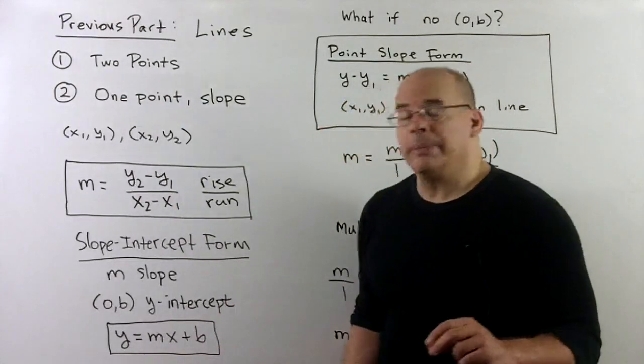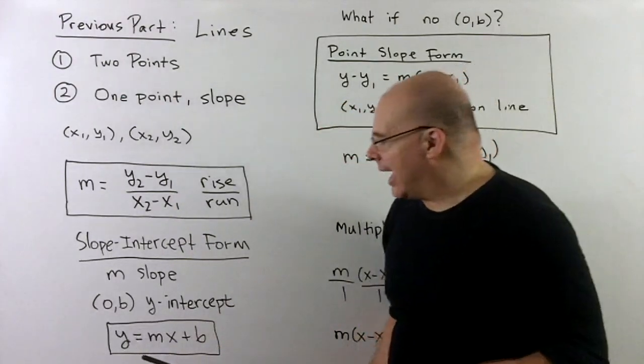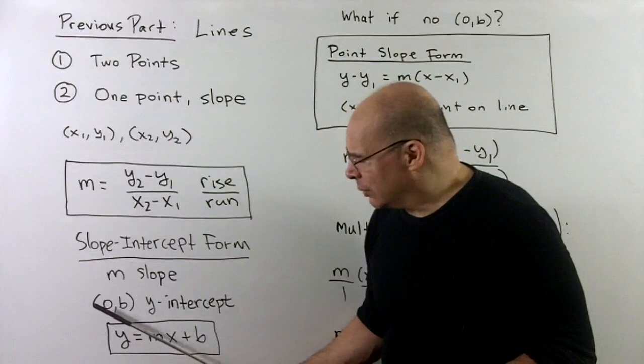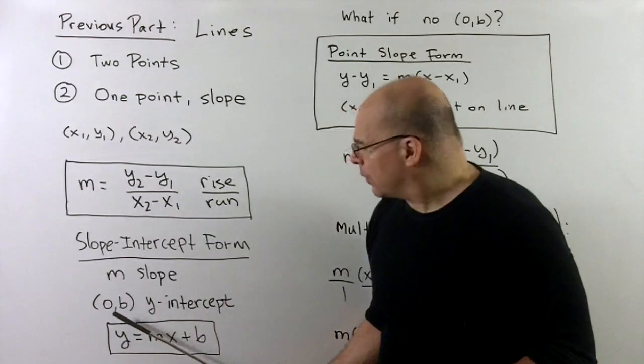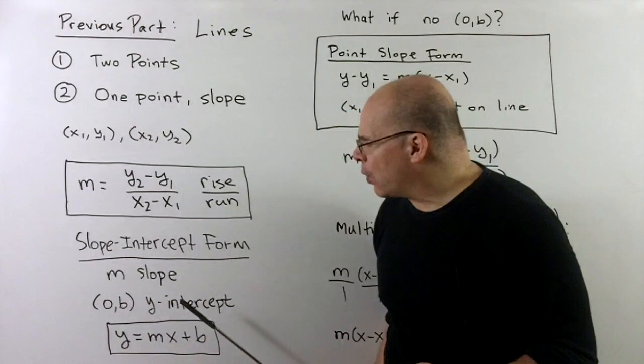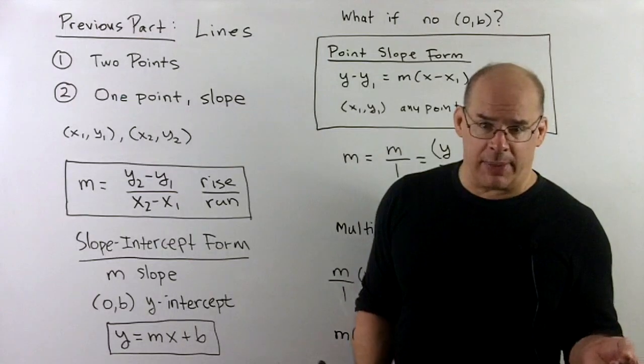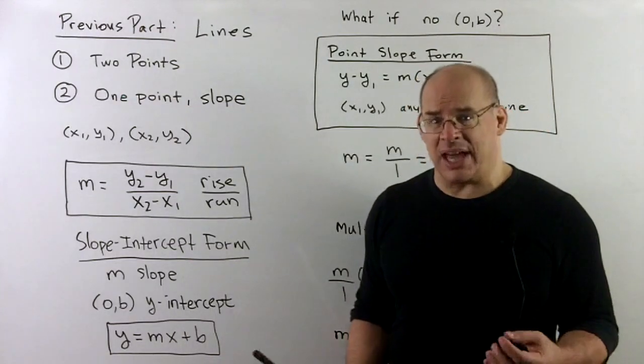Once we have this, if I have the slope and the y-intercept, so that's where x is equal to zero for the line, if it exists, then we have the slope-intercept form, which is the familiar y equals mx plus b. And we worked with that last time.